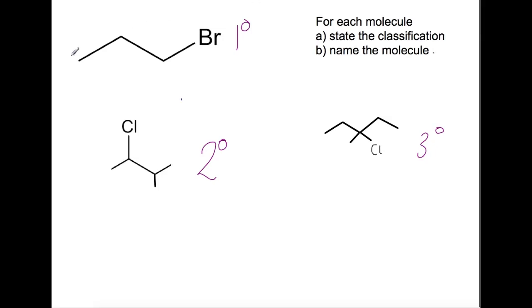If we look now at naming the molecule we need to find the longest chain of carbons. So that's this chain of three carbons: one, two, three. And that would be propane. We then number the chain from the end closest to the halogens. We've got one, two, three. And this is a bromo. So this will be 1-bromopropane.